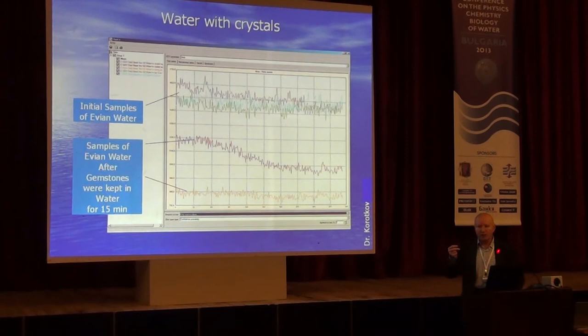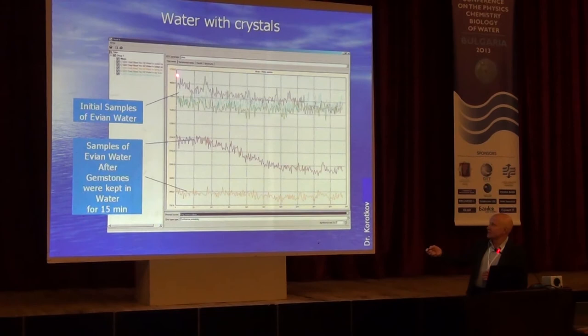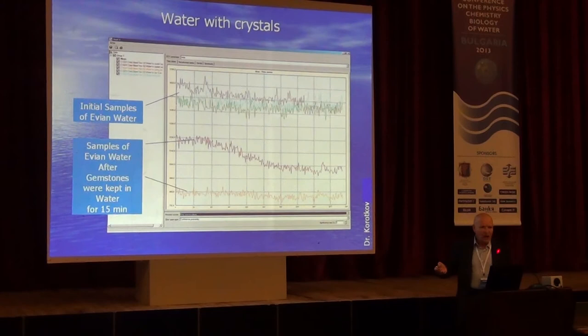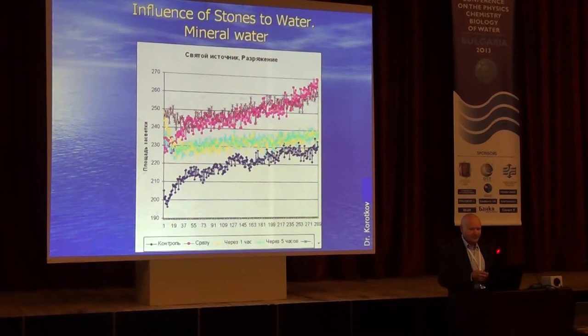So the first stage of any experiment with water is to select the appropriate water for the particular experiment. You see the initial sample, then a sample of water kept near the gemstone for 15 minutes, and then for a couple of hours. The gemstone was cleaned so there were no chemical residues — and so a clear effect of some form was created.